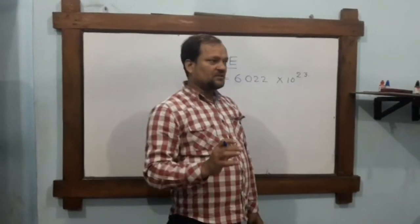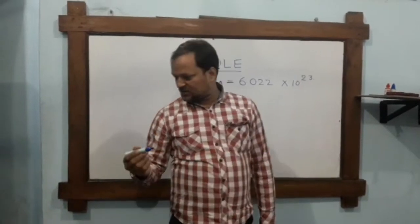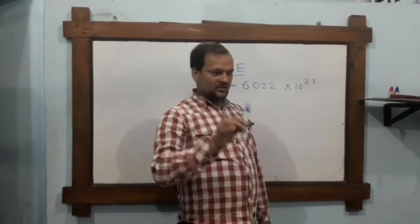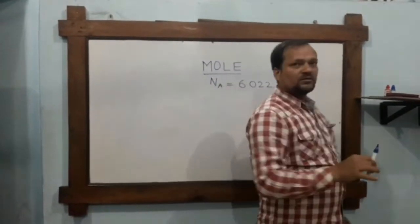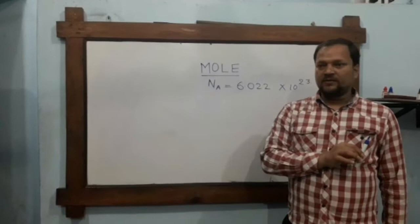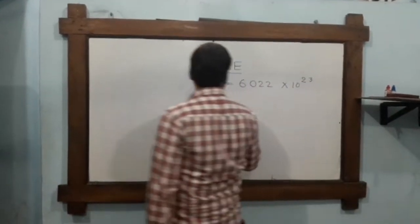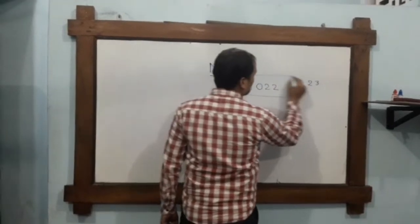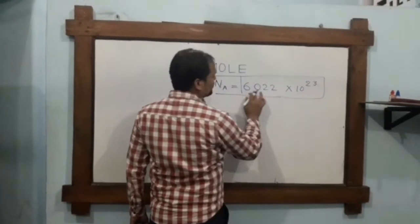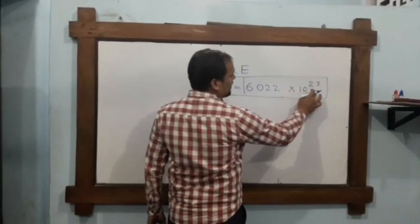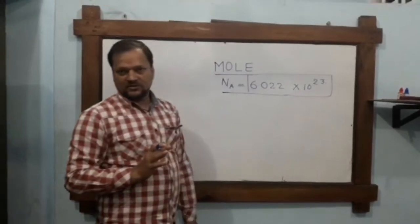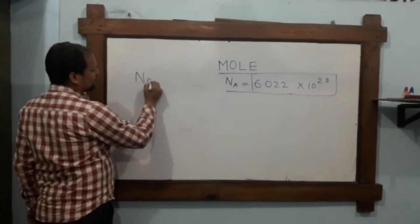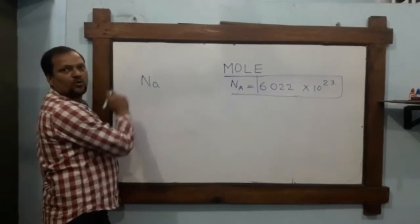Just like a dozen means 12 pieces, one mole represents 6.022 × 10²³ of any particle. For example, if we say sodium, this is one mole of sodium containing that many atoms.